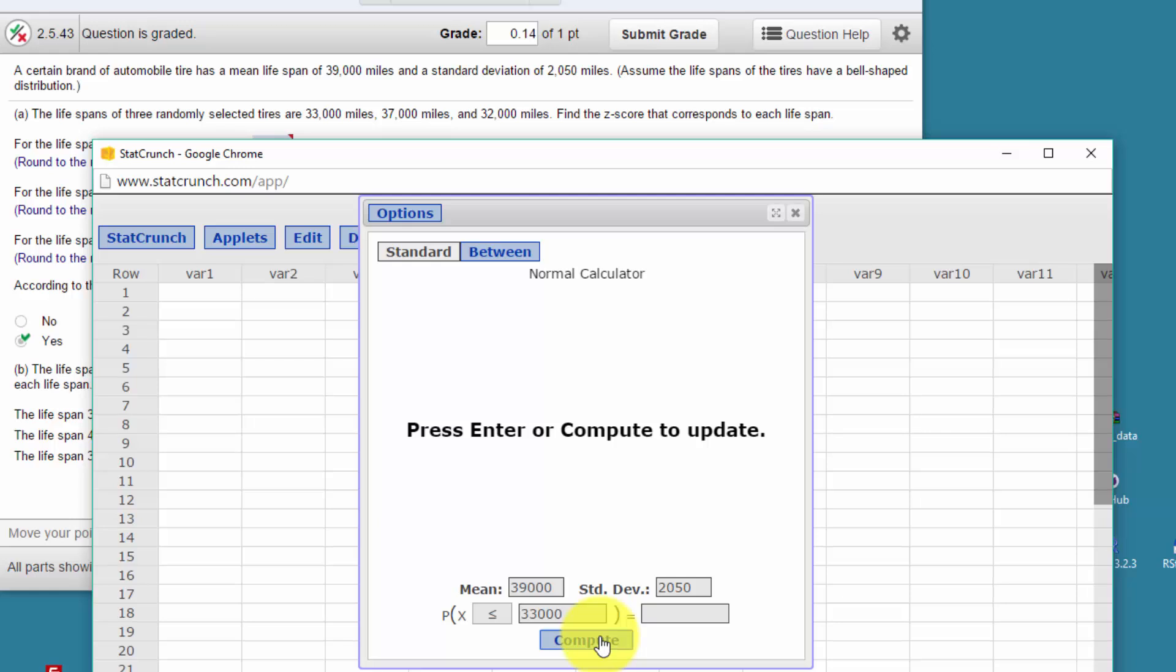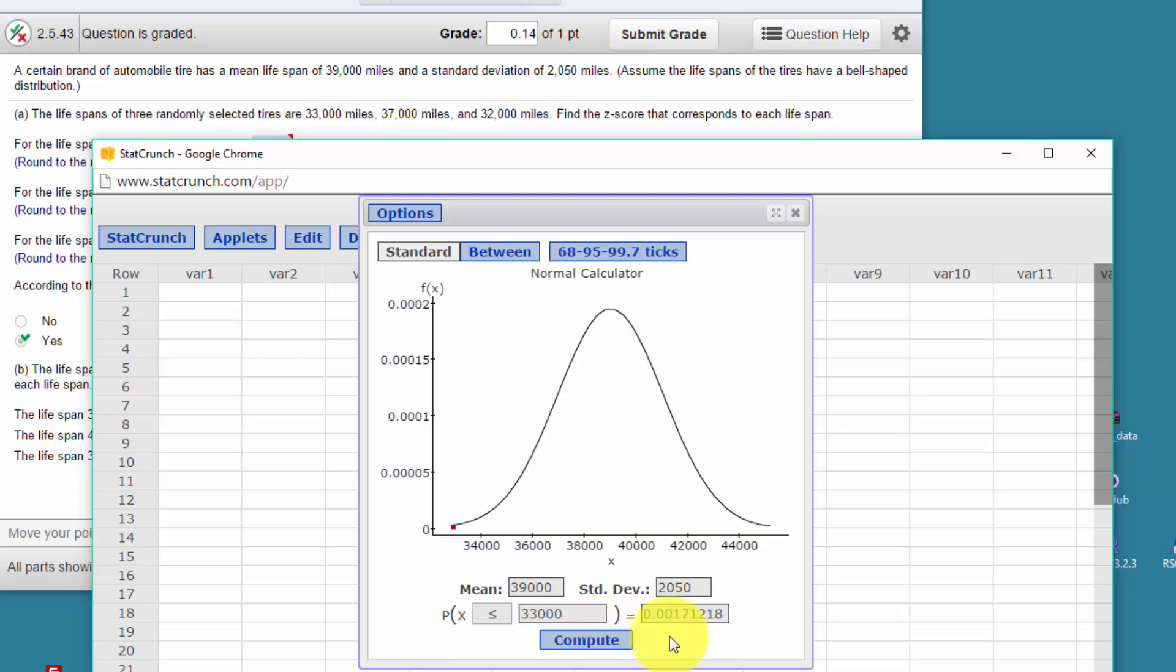Now I'm going to click on Compute, and you can see that we were given a probability of 0.0017, and you can just barely see it there.